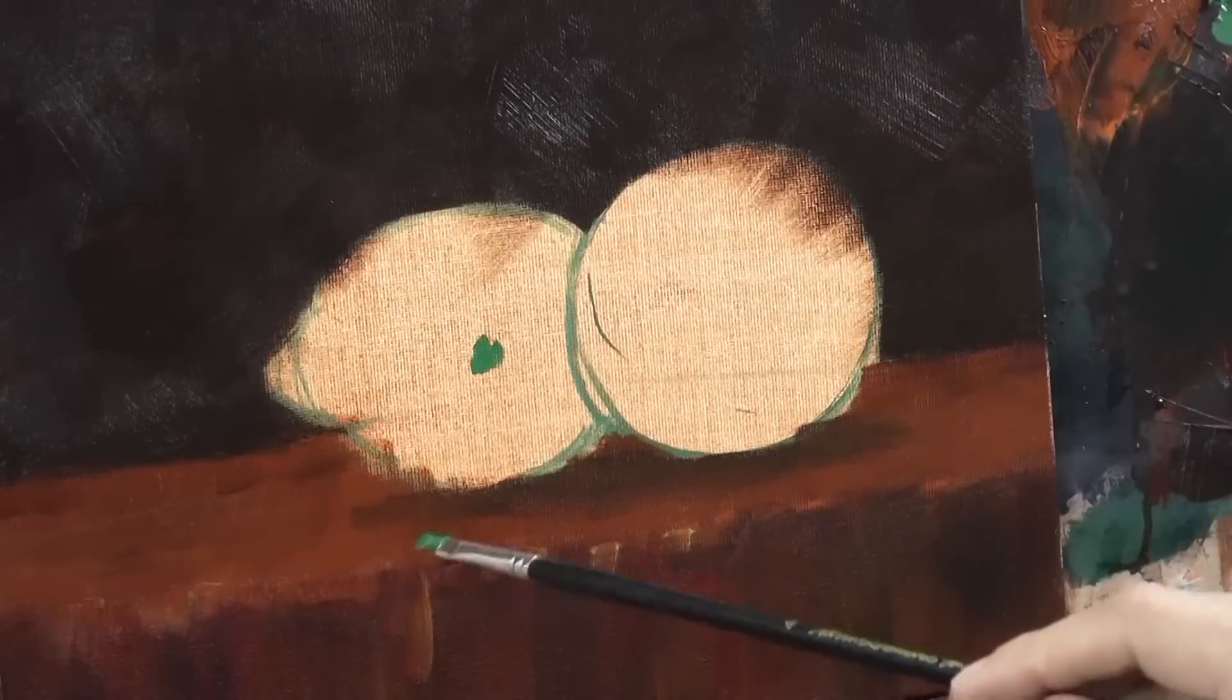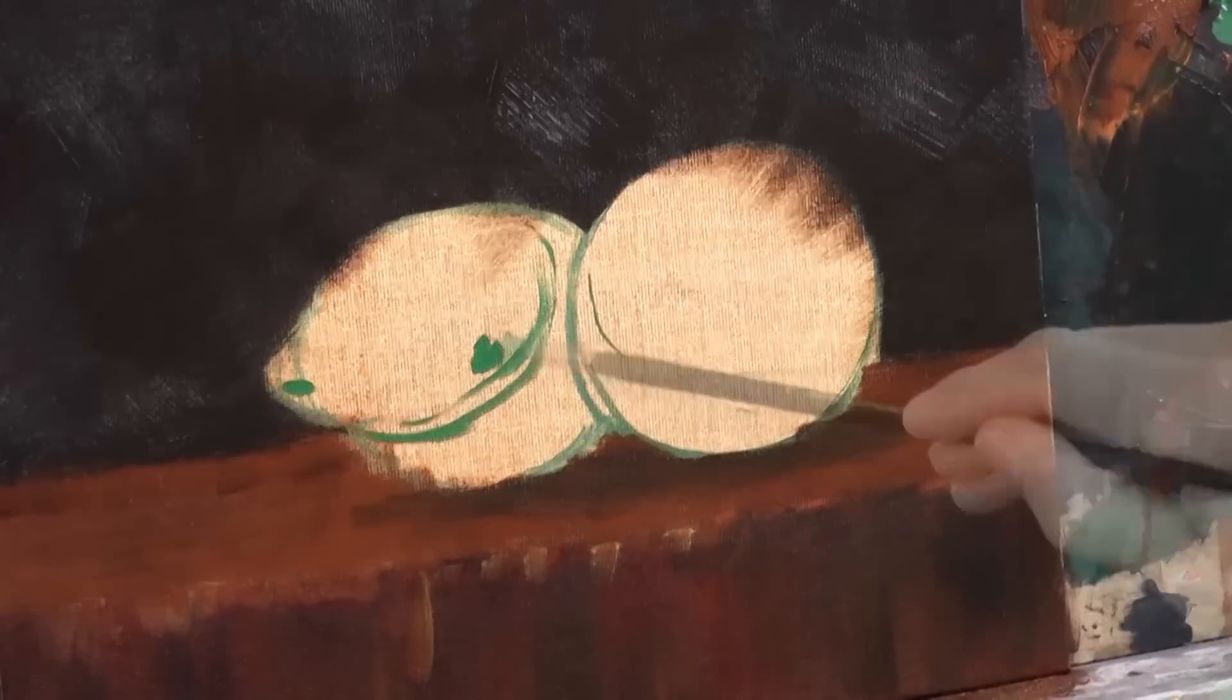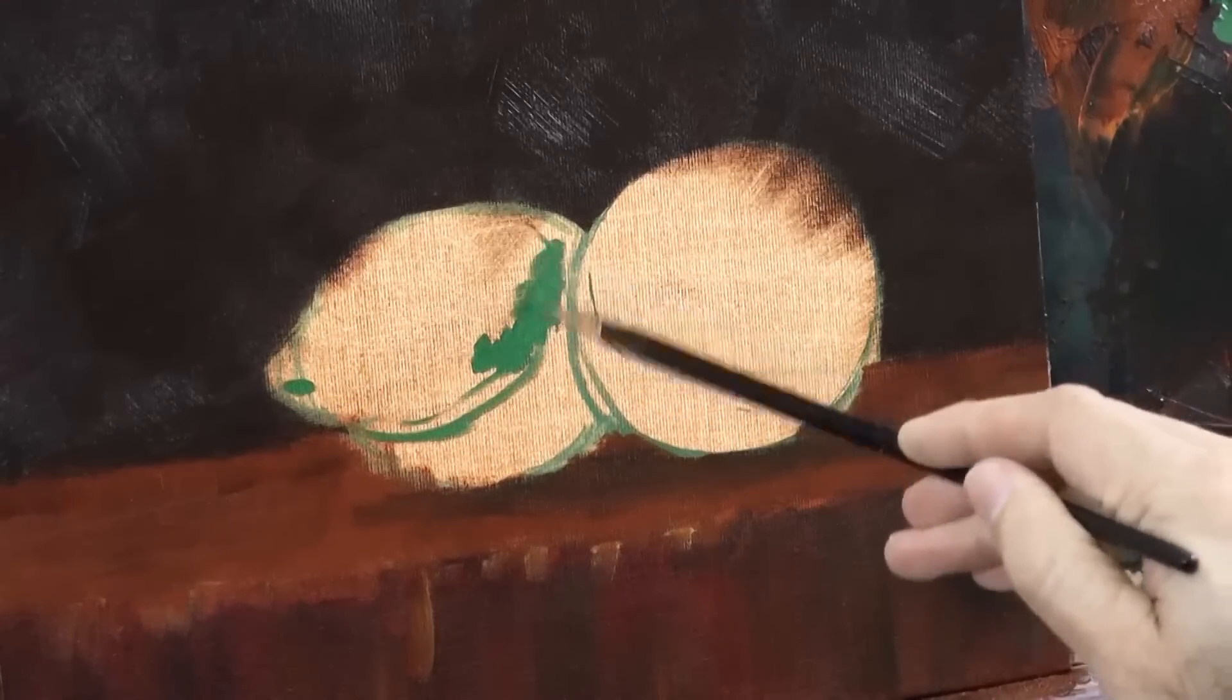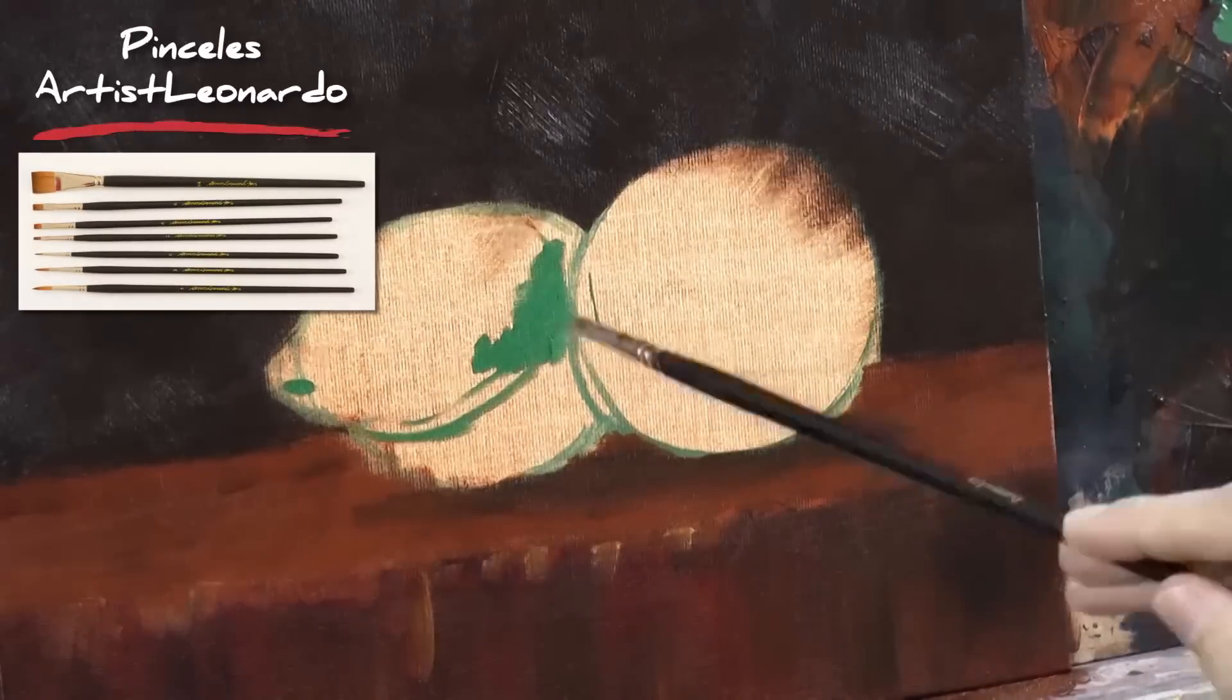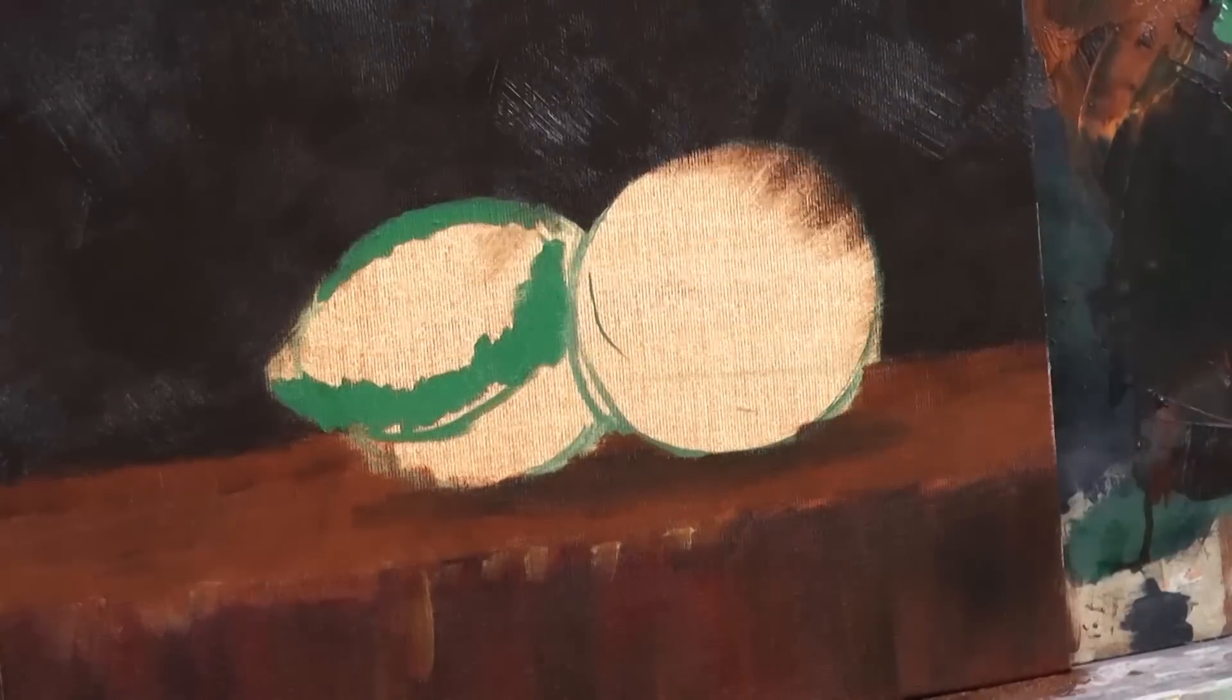The background will be dark with sepia and some touches of cold black, that's a blueish black. We pick up again the oxide of chromium which will be the main color for the limes. The curved line that I painted is to indicate more or less where the shade will be.